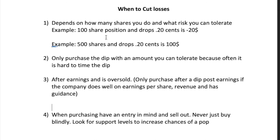For people with more money buying 500 shares, keep in mind that every 20 cents it drops is a $100 difference in your actual cost basis. Rule two: I only purchase the dip with an amount I can tolerate, because timing the dip is difficult. Even if the RSI is very low, it can still oversell, so you have to be careful and always protect your overall cash balance.